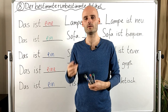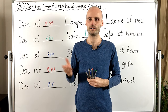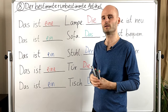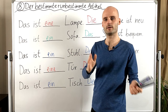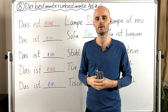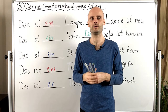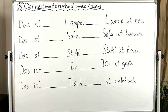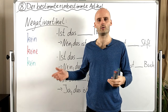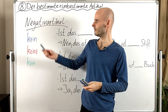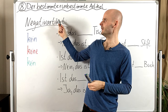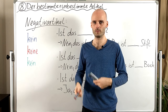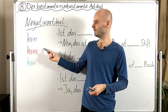Dann lernen wir jetzt noch den Negativartikel. We already had it — it's 'kein'. It works the same way as the unbestimmte Artikel. Ein oder kein, eine oder keine. Hier haben wir den Negativartikel. Das ist wie der unbestimmte Artikel, also kein, keine, kein. Der unbestimmte Artikel ist ein, eine, ein — Maskulin, Feminin, Neutral.